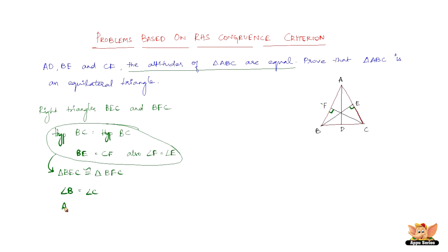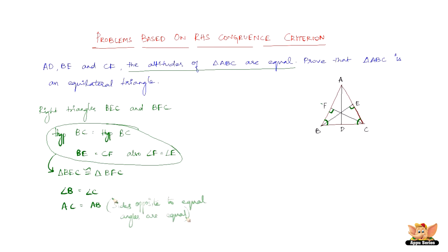Also, AC equals AB. This is because we have angle B equal to angle C, and sides opposite to equal angles are also equal. That is why AC equals AB.